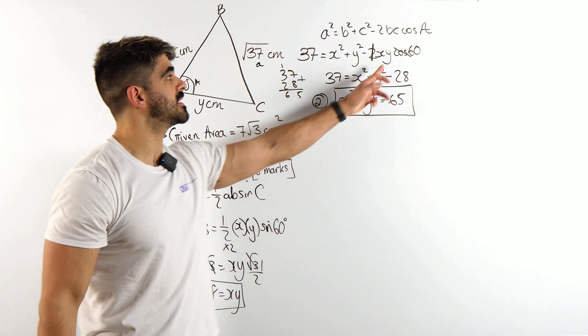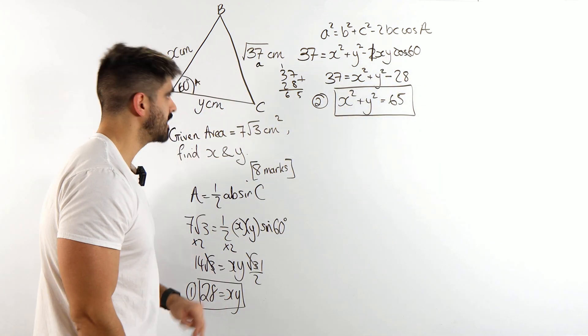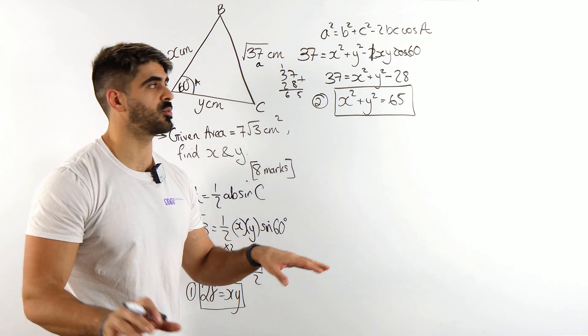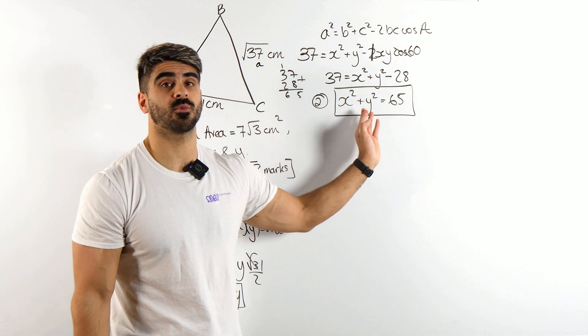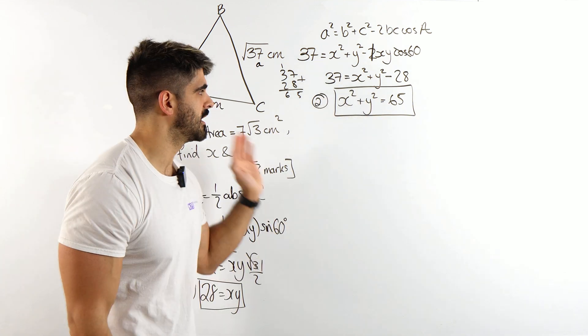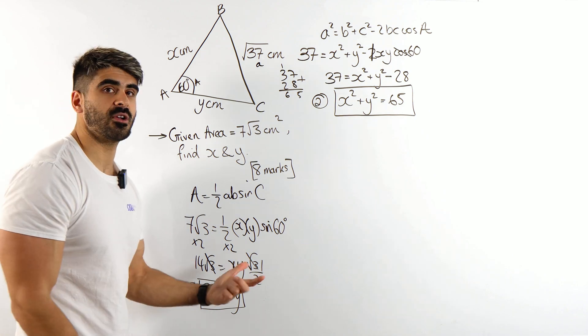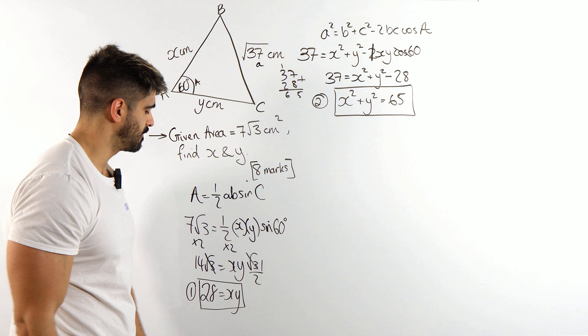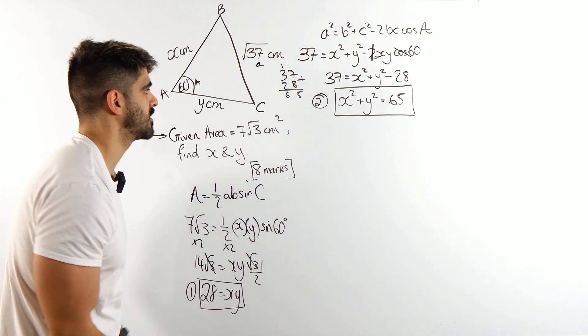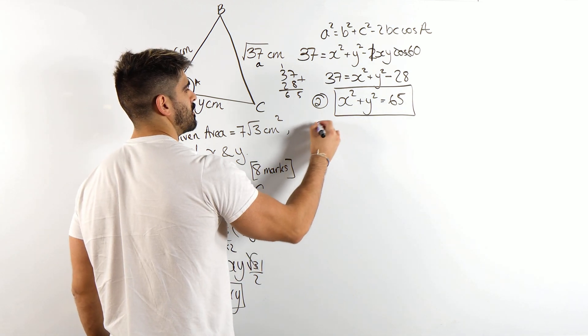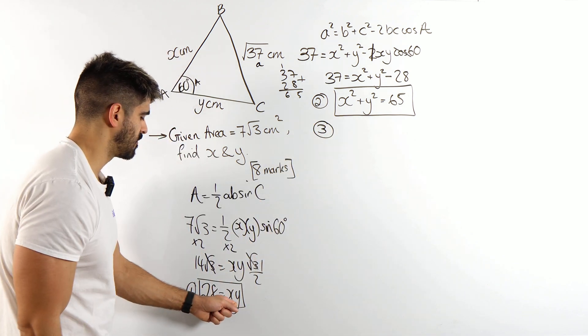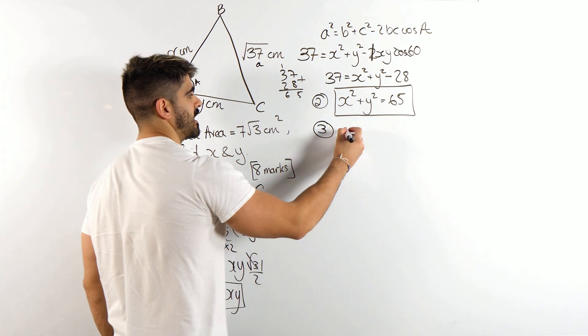Now, even though we replaced that with this, that isn't really the simultaneous equations. We could have left it as x y and then subbed in again, but now we have to do our simultaneous equations. You want to rearrange for either x or y and substitute. Yeah, and it's going to be easier to do it in this one. We call that the subject equation. I'll call it number 3. This is rearranged for y. y is 28 over x.